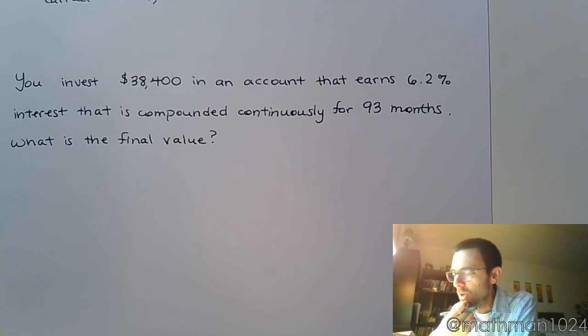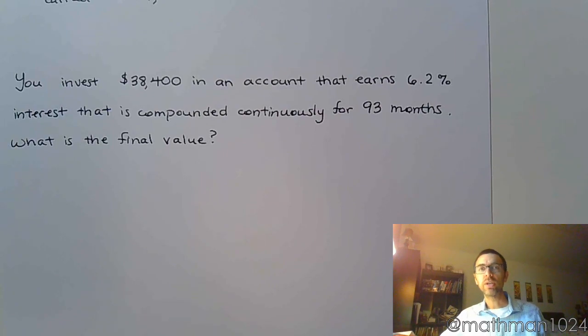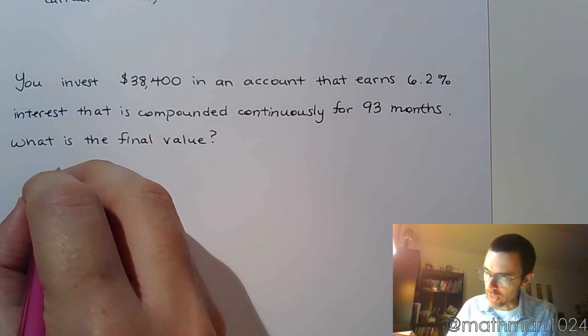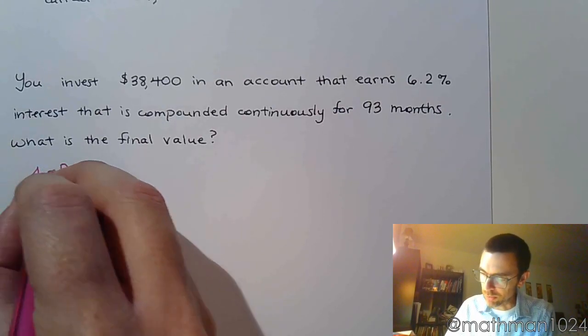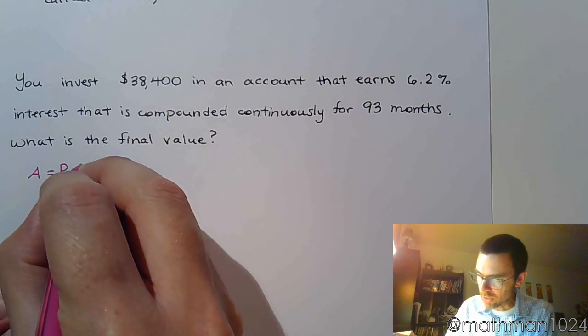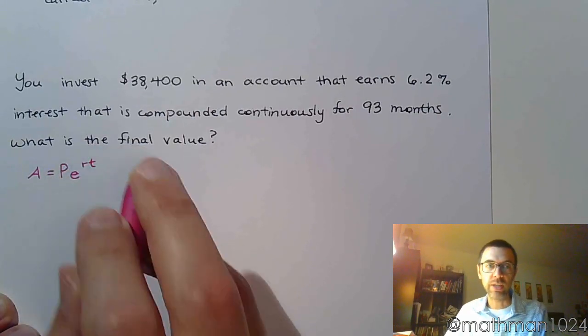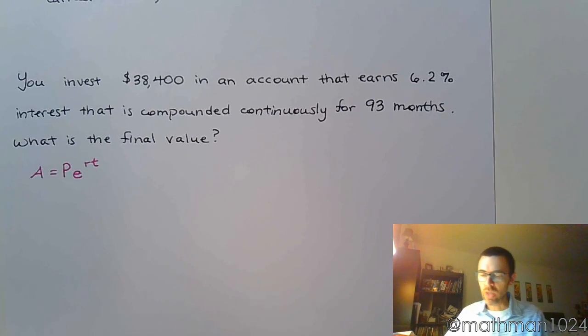All right. So, here's what we know about this. It's compounded continuously, so it's not discrete events. So, that means it's a completely different formula. And, the formula for continuous compounding is the amount is equal to p times e raised to the rt. So, remember, e is that Euler's constant, and it's a special constant just like pi.